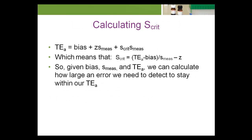The S-critical value is simple to compute, given a bias, S-measure, and a quality specification. The Z-factor is a probability adjustment factor, usually set to 1.65 for 90% probability.